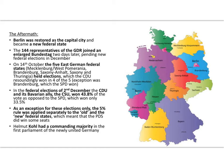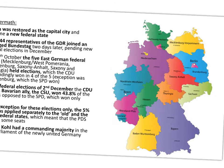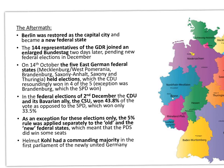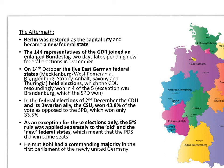Looking at the aftermath — there's a nice map showing Berlin as a new state. Berlin was restored as the capital city and became a new federal state. The 144 representatives of East Germany simply joined the enlarged Bundestag. They did slightly change the number of states, merging some as part of reunification.